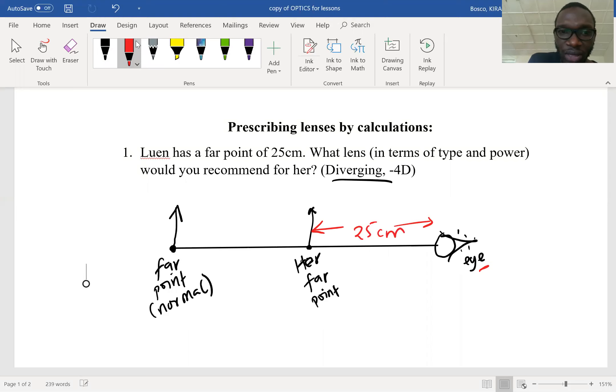We have learned that if the person has a far point, then that person is short-sighted. For a normal eye, the far point should be infinity. Here it's not infinity, it is 25 centimeters. The 25 centimeters is a very small distance.